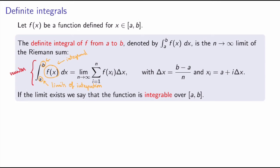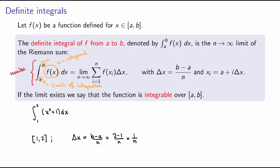Let me give you an example of a definite integral. Suppose I write the integral from 1 to 2 of the function x squared plus 1. I'm integrating over the interval 1 to 2, so I can calculate the objects entering the definition. Delta x, the width of the rectangles, is b minus a over n. Here b is 2 and a is 1, so delta x equals 1 over n.